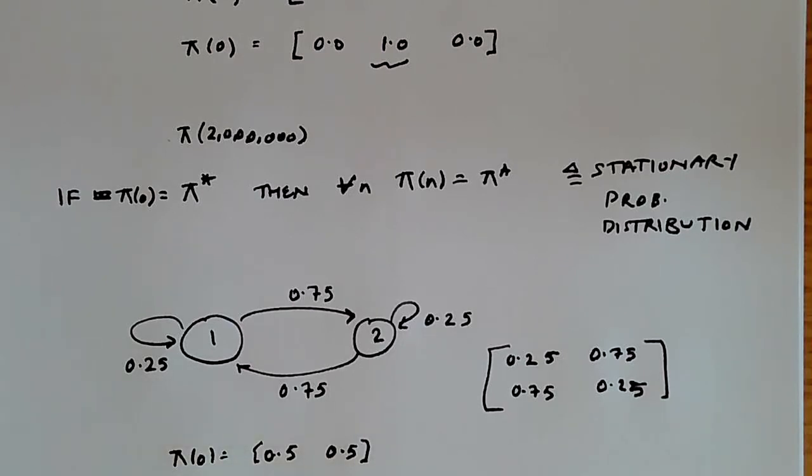The first element is going to be 0.5 times 0.25 plus 0.5 times 0.75, and the second element, let's ignore that for a moment. And this is going to be just nothing more than 0.5 times 1.0, and that's going to be 0.5.